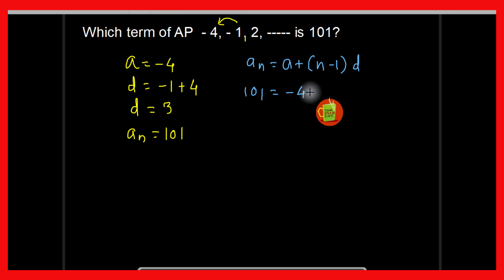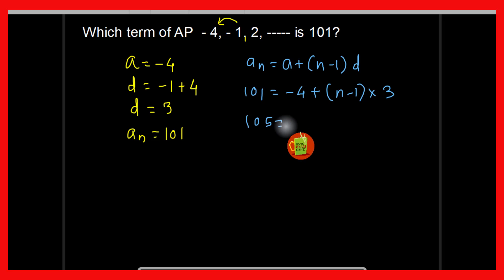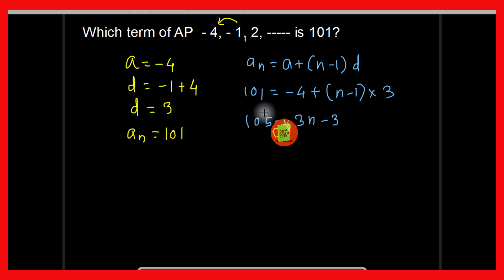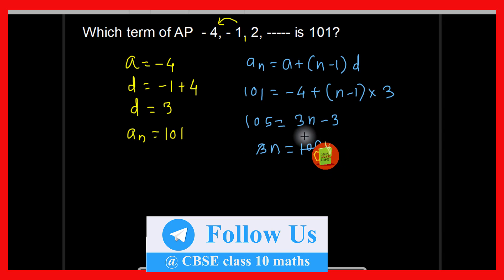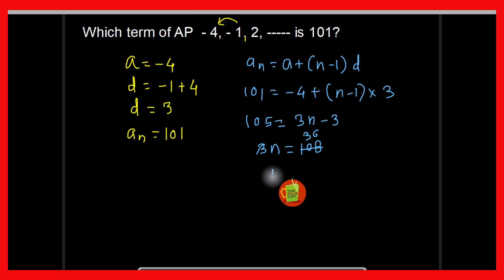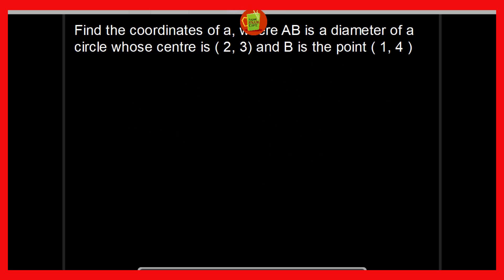So 101 equals first term minus 4, plus n minus 1 multiplied by d which is 3. Taking 4 to this side gives 105 equals 3n minus 3. Taking 3 to this side gives 108 equals 3n, and therefore n equals 36. So 101 will be the 36th term of this given AP.